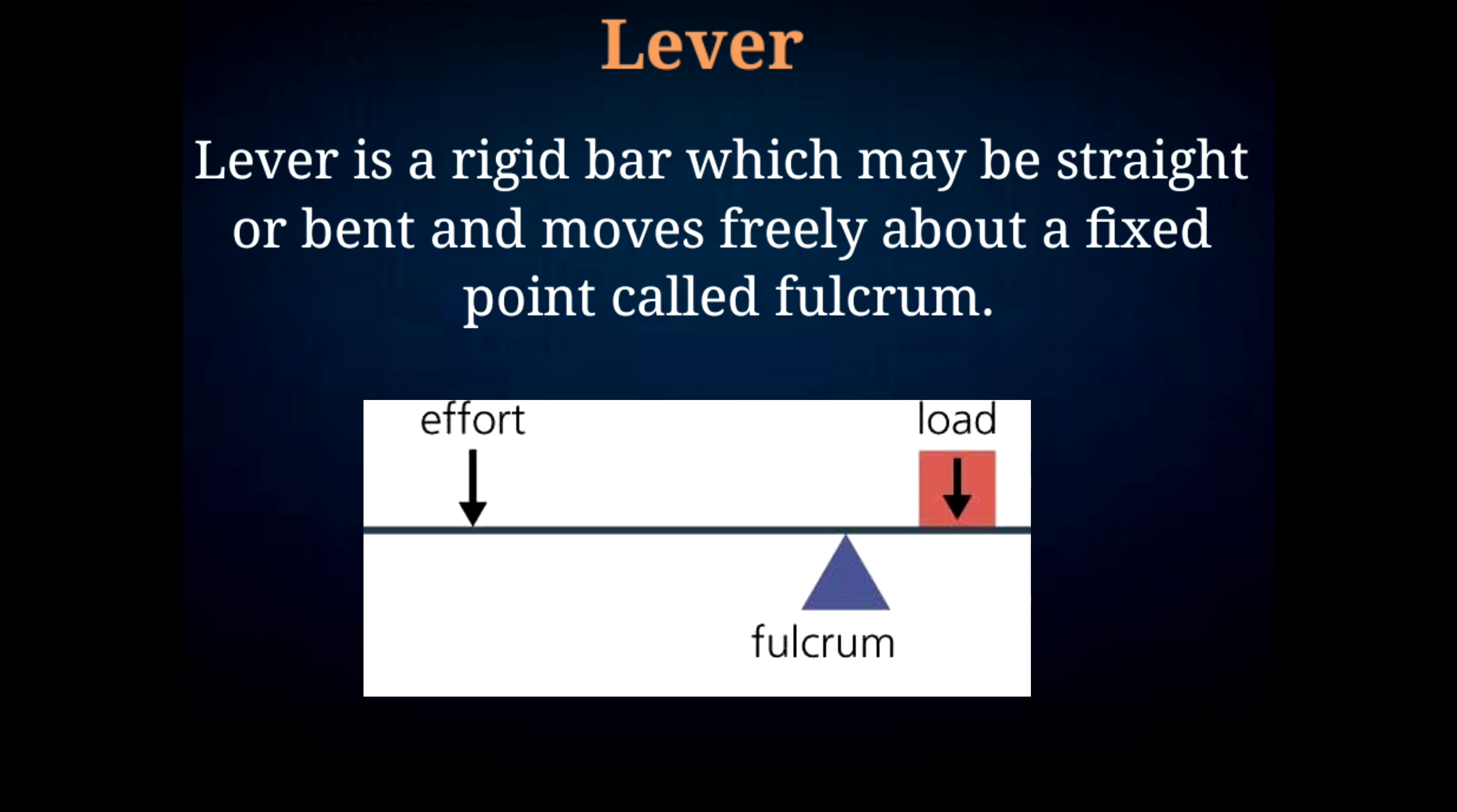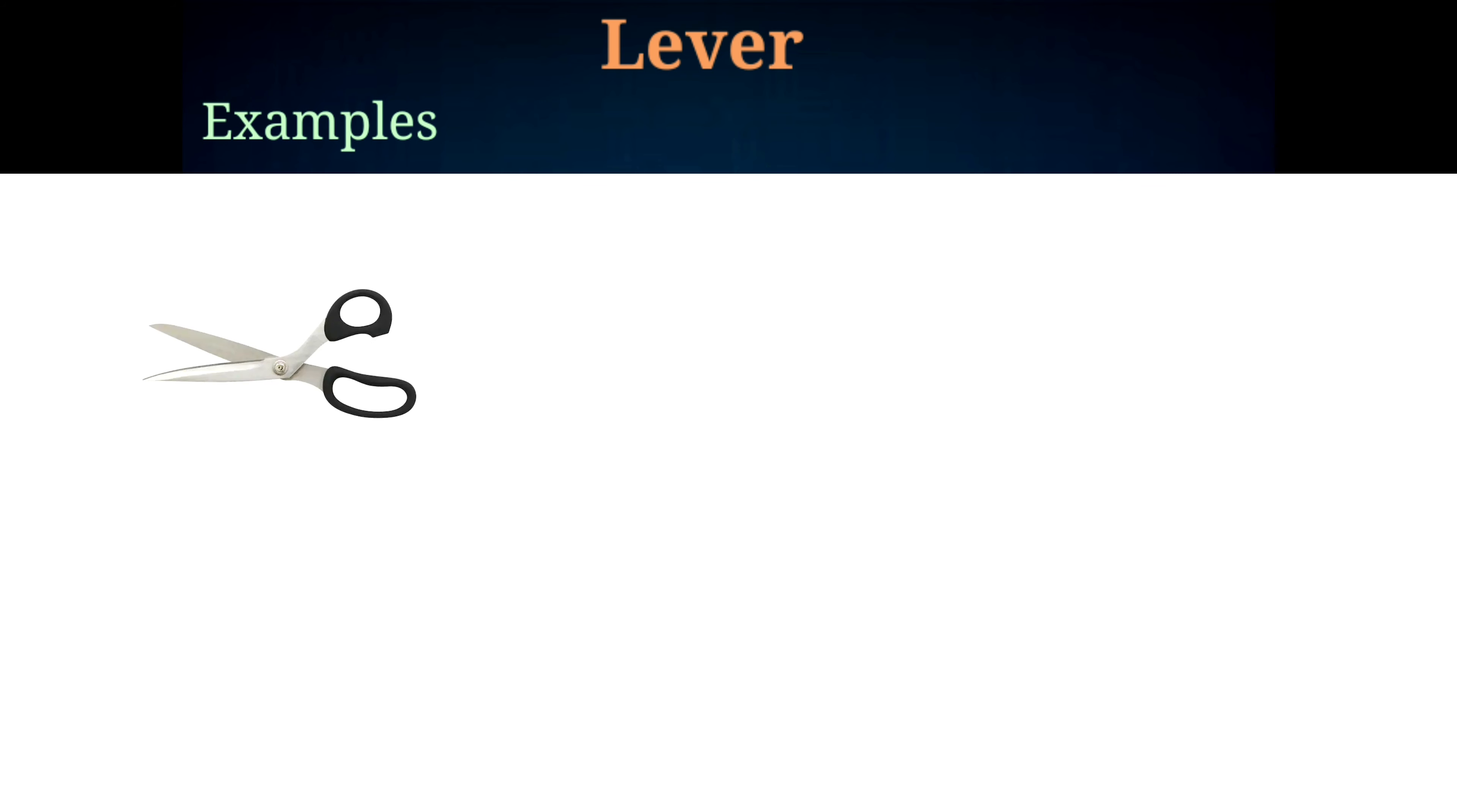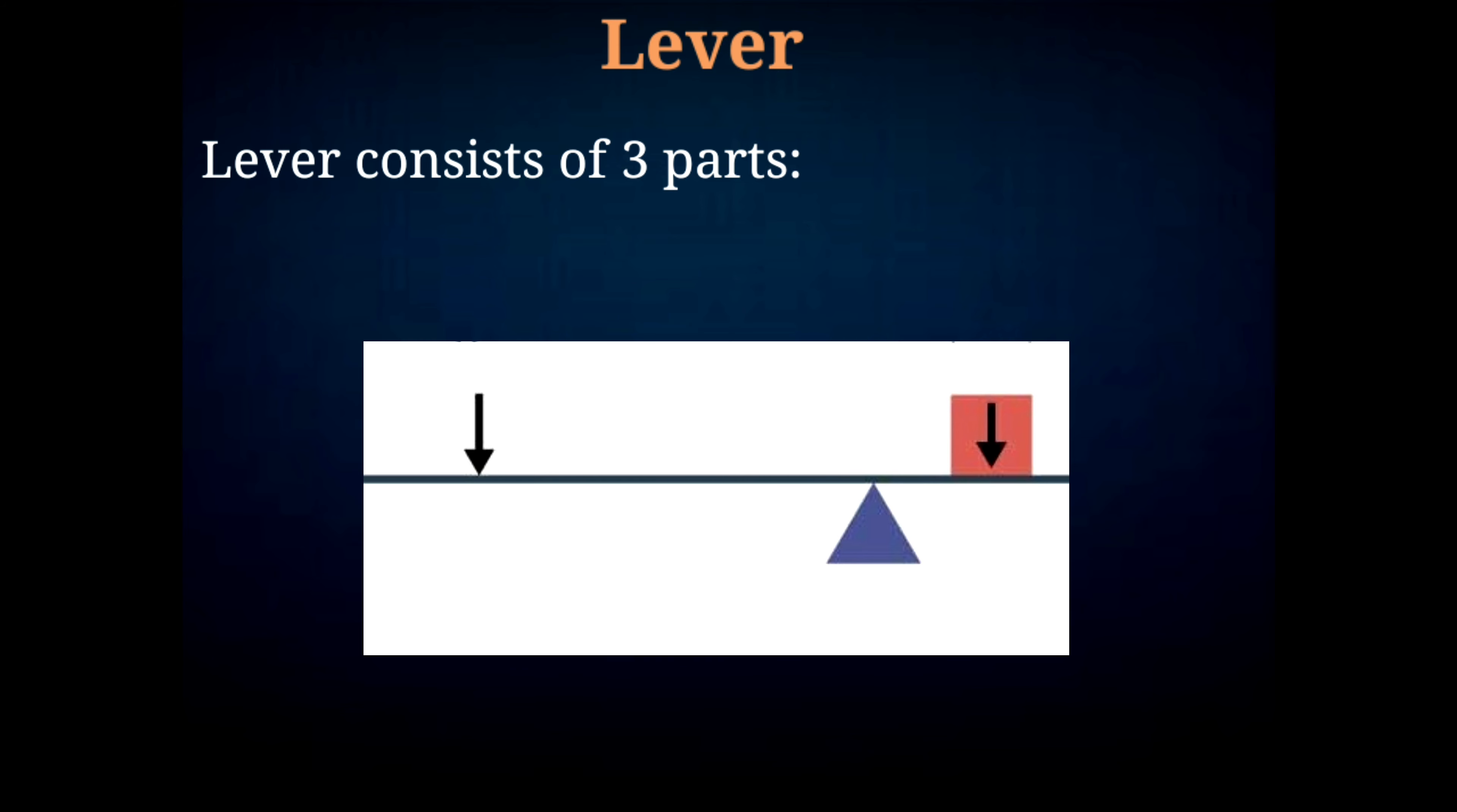Some examples of levers are scissors, beam balance, seesaw, bottle opener, nutcracker, saw, well, etc. Lever consists of three parts: they are fulcrum, load, and effort. On the basis of position of the load, fulcrum, and effort, there are three types of levers.